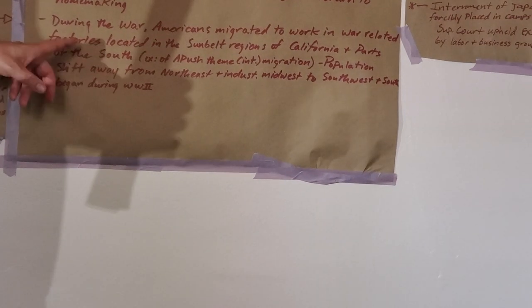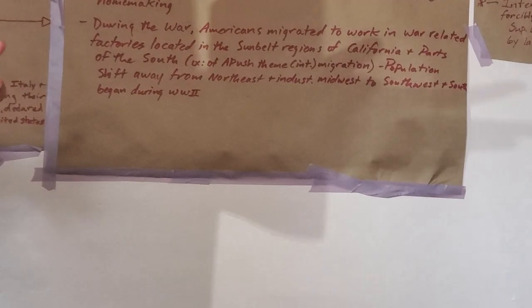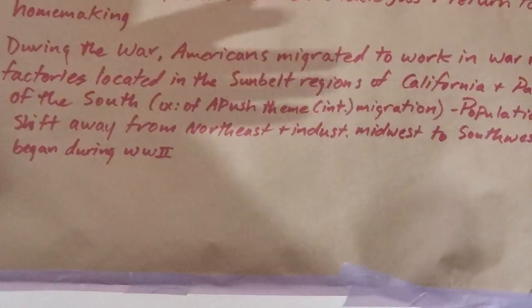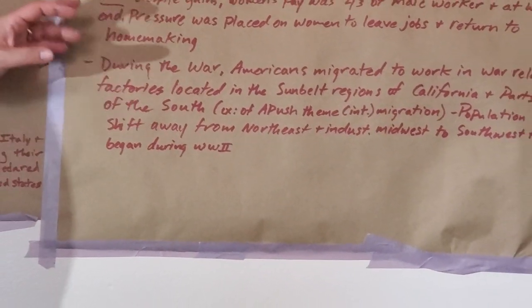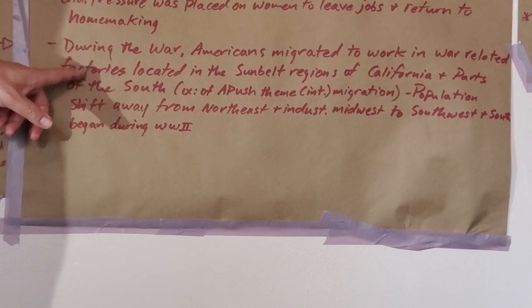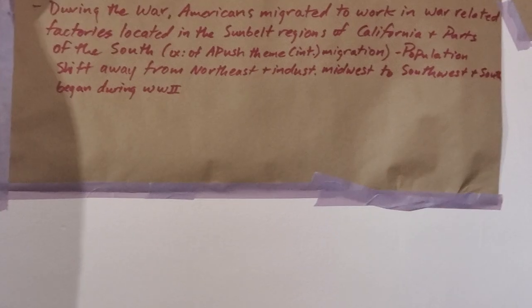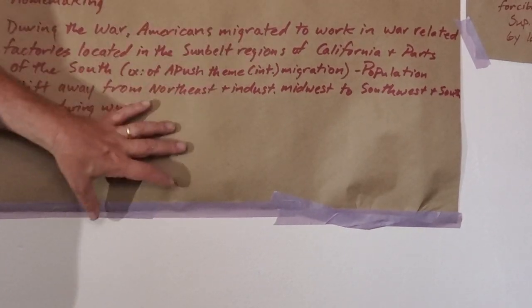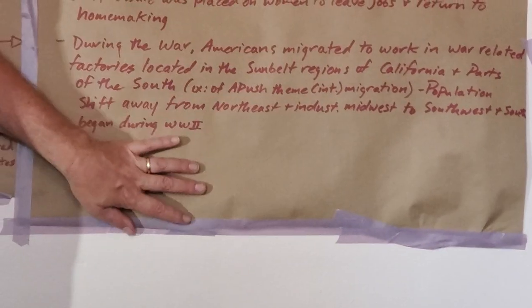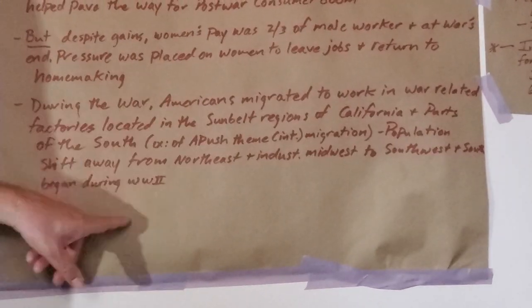Internal migration is a big subject in this class. This is another version of internal migration — a lot of people moved to the Sun Belt. It's called Sun Belt Migration, meaning the Southwest, California, and parts of the South, away from industrial centers in the Midwest and Northeast. They moved there to work in the defense industry. A lot of women moved along with able-bodied men who weren't drafted for whatever reason.